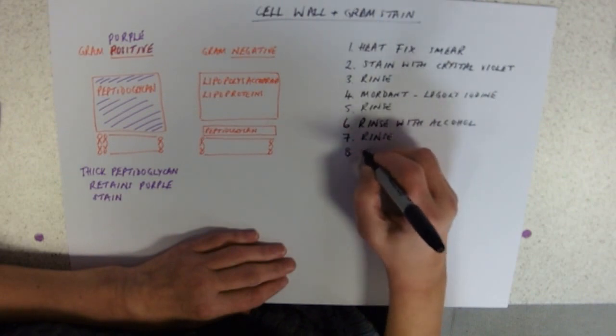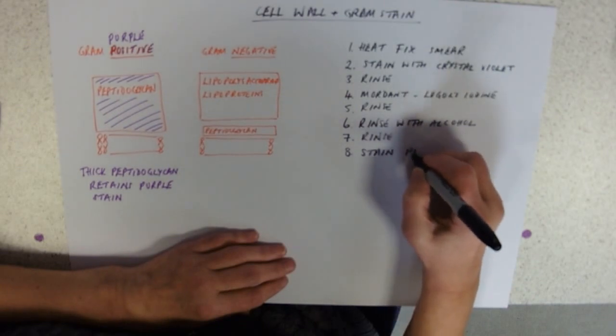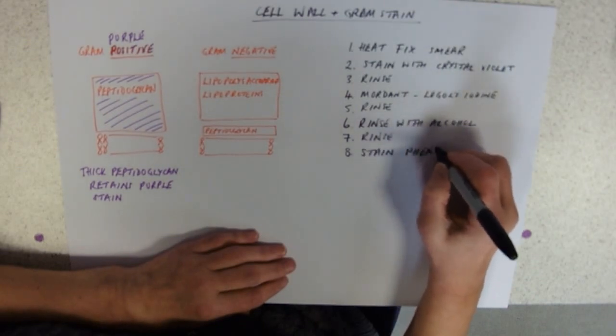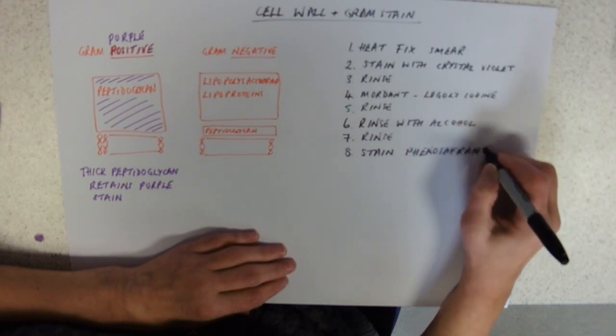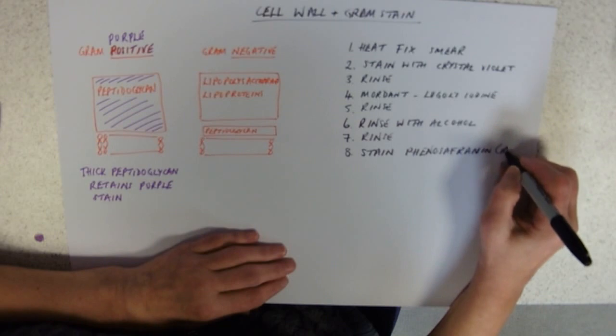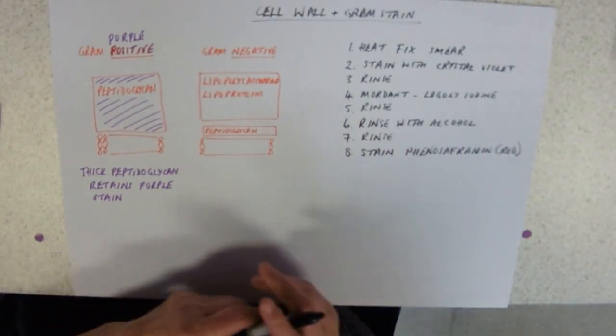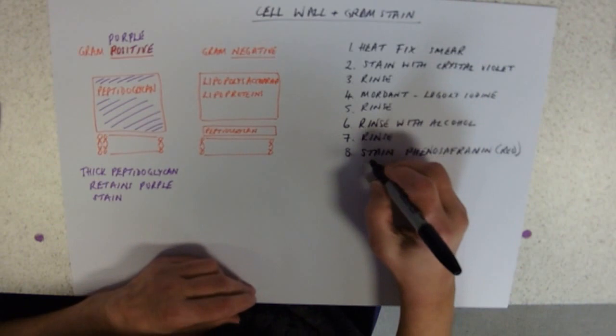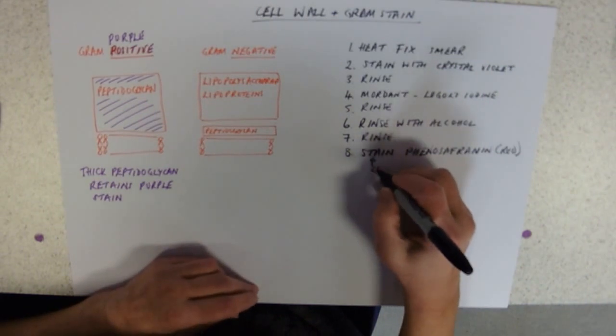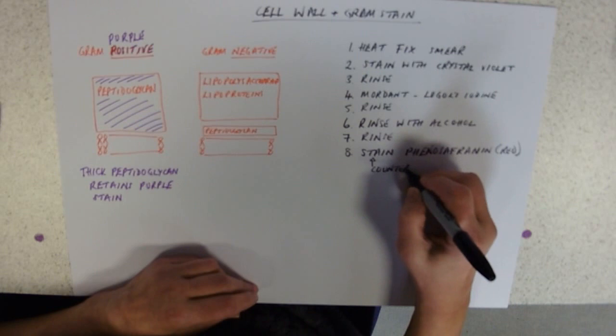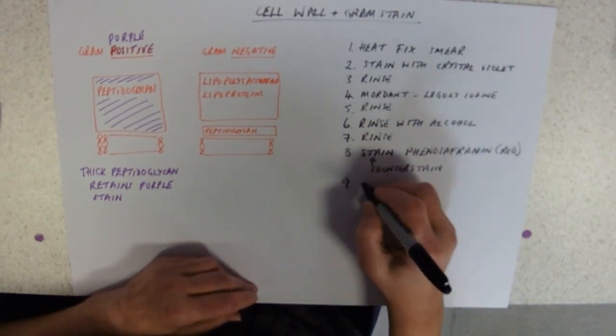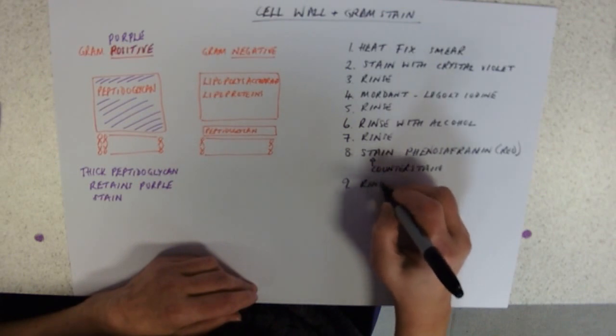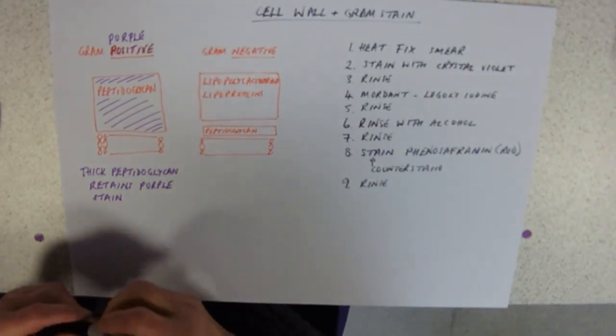And then you apply the counter stain. So you stain with phenosafranin, which is red. This is a counter stain, that means it will stain the bits that haven't been stained before. And of course, you rinse. You then need to dry it and shove it under a microscope.